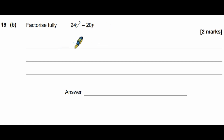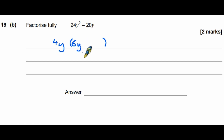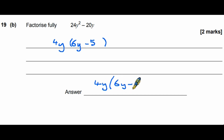Part b asks us to factorise. We take out the highest common factor of each term. For 24y² − 20y: the HCF of 24 and 20 is 4, and the HCF of y² and y is y. So we take out 4y. Inside the bracket: 24y² ÷ 4y = 6y, and 20y ÷ 4y = 5. The answer is 4y(6y − 5).